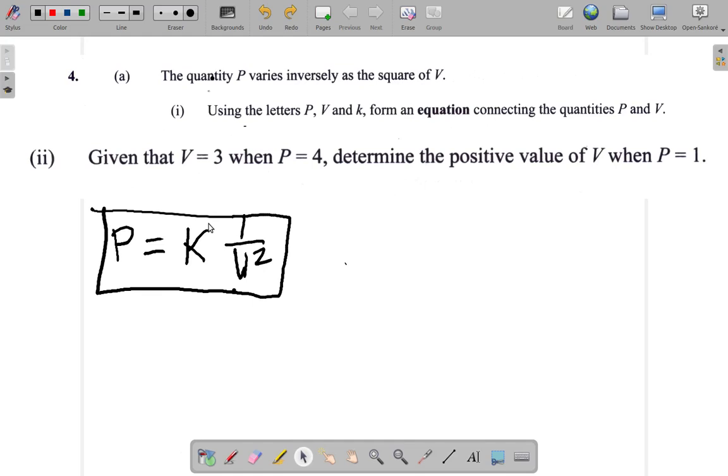Earlier, we obtained this equation: P equals K times 1 over V squared. We are asked to form an equation using P, V and K, where the quantity P varies inversely as the square of V.